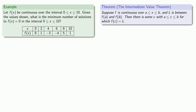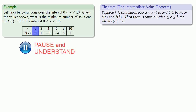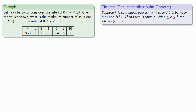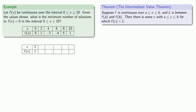We want to find where f(x) equals 0. Looking at our function values: at x equals 0, our function value is 8, which is too big. At x equals 2, our function value is 1, which is too big. At x equals 4, our function value is minus 3, which is too small. Since our function is continuous, we reason as follows: at x equals 2 we're too big, at x equals 4 we're too small, so some place in between will be just right. There is a solution to f(x) equals 0 somewhere between 2 and 4.